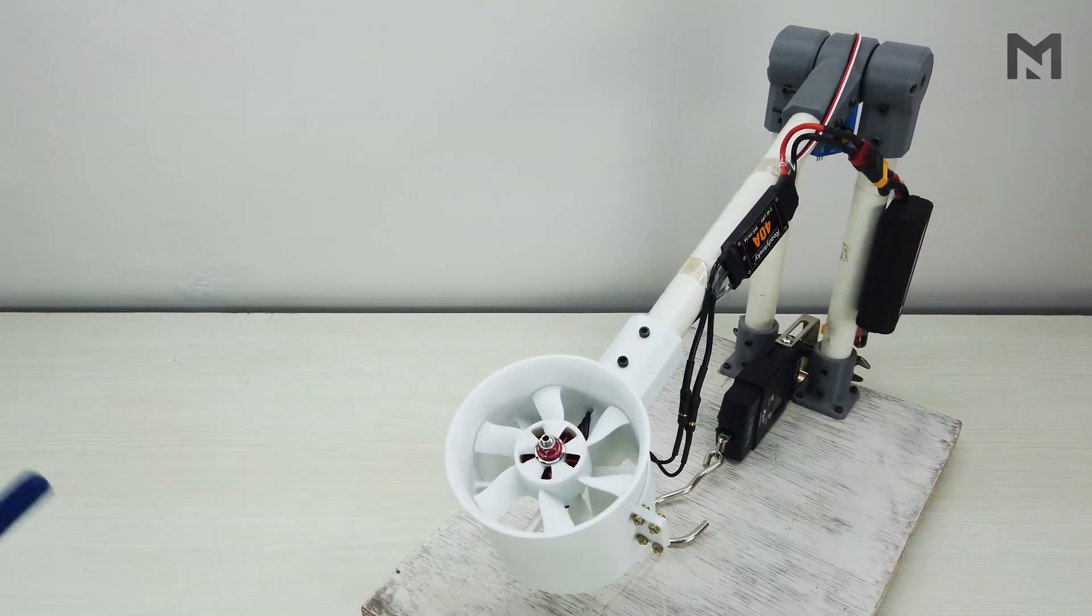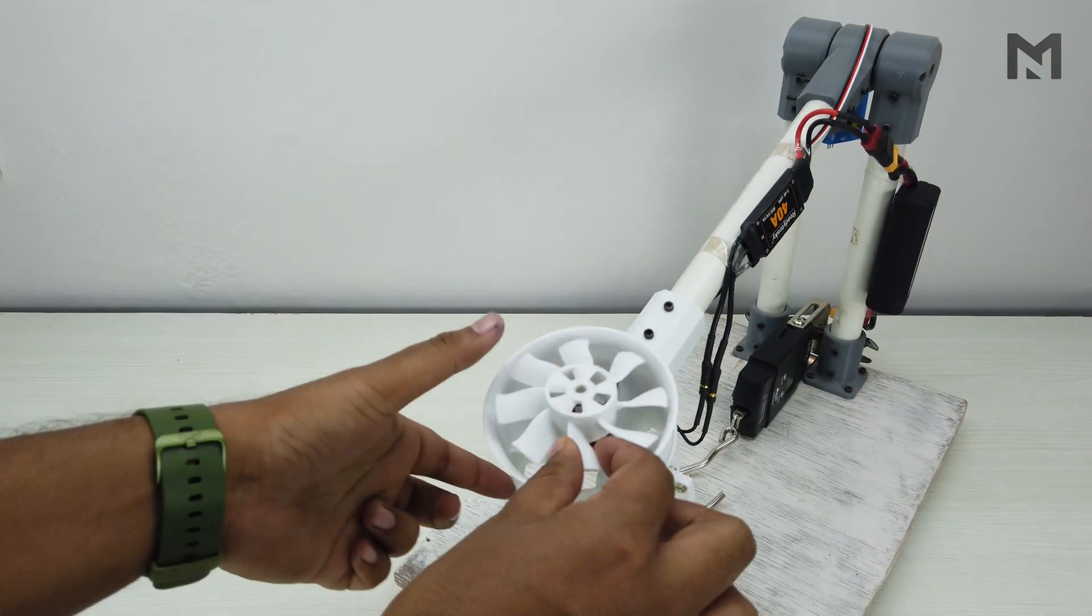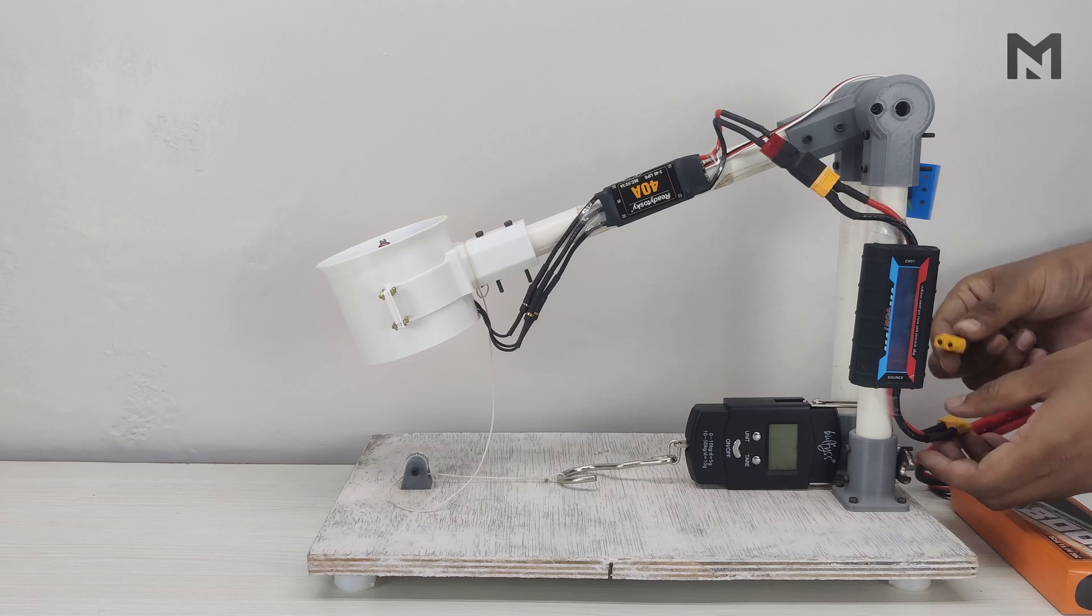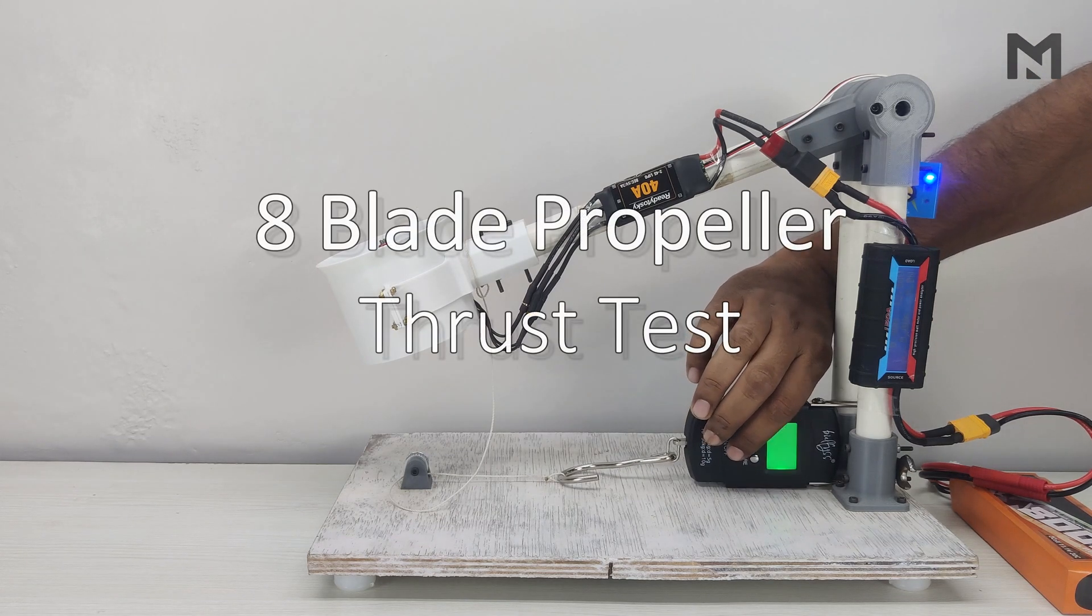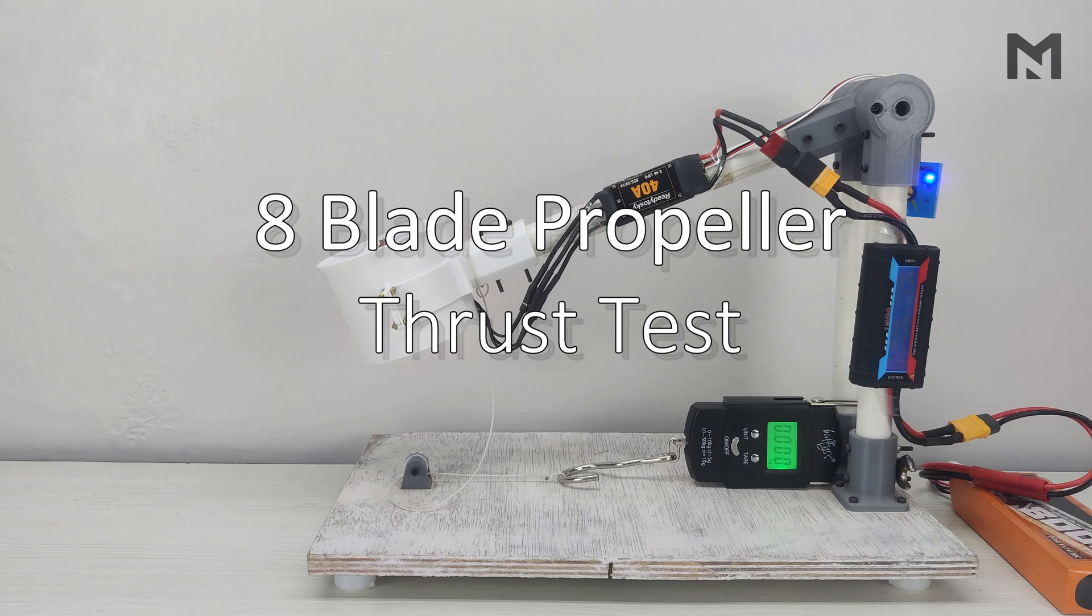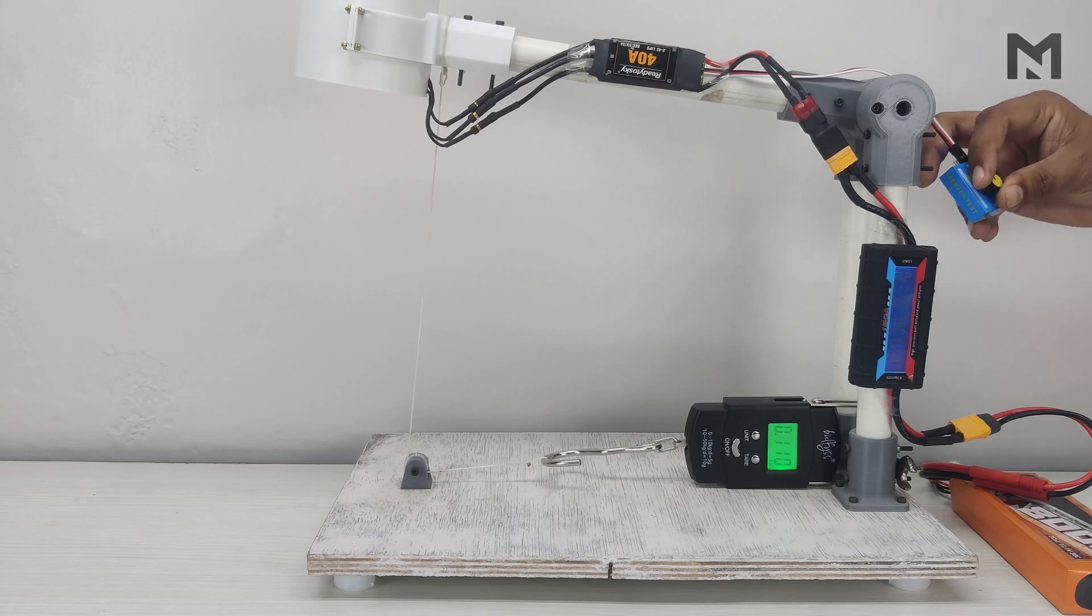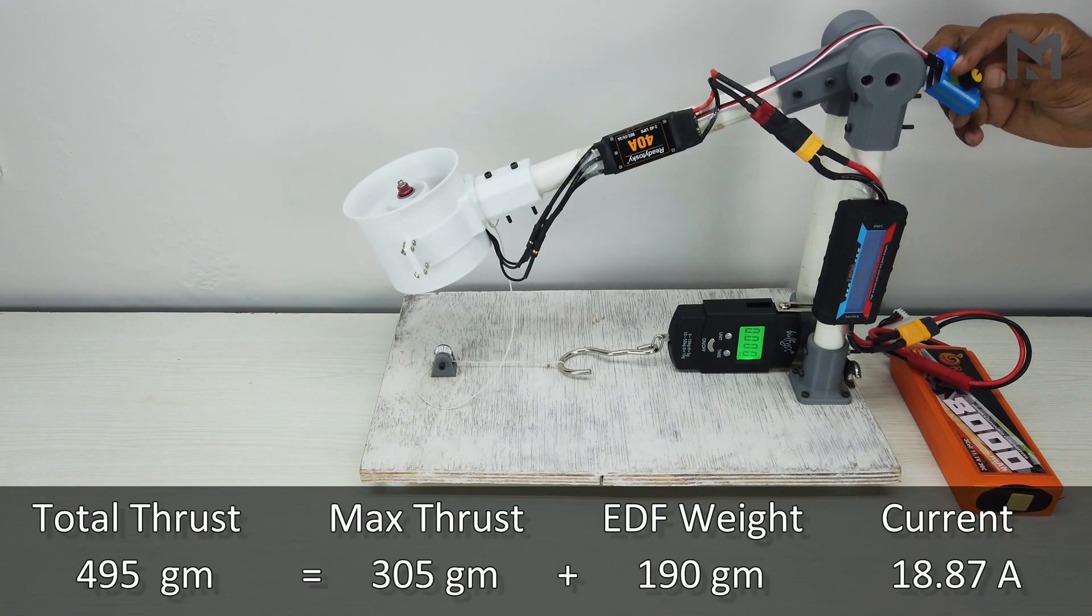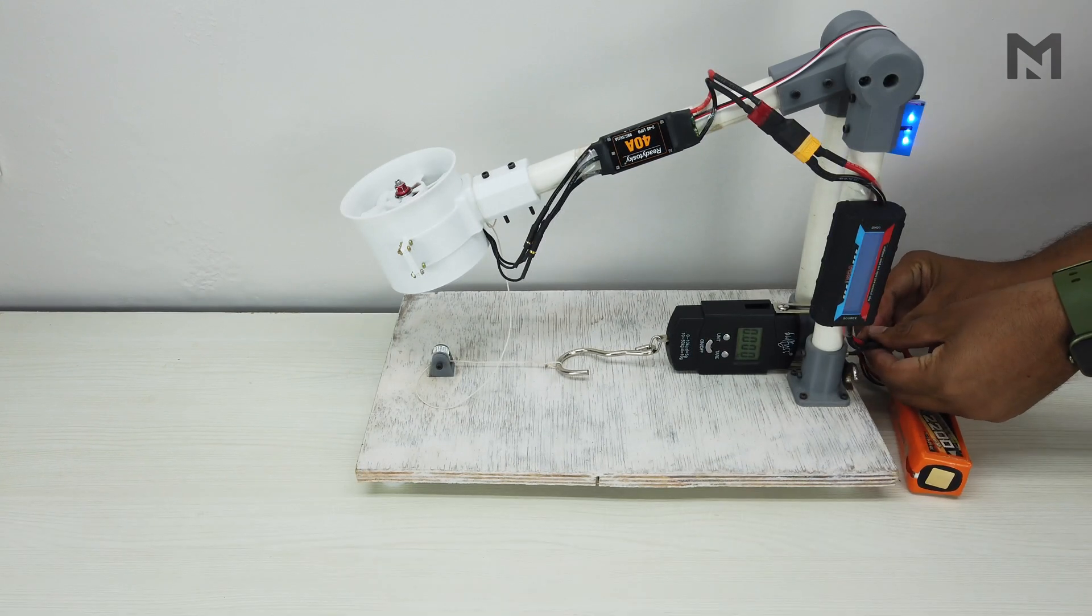Now it's time to replace this propeller with the 8 bladed one. This is the 8 bladed propeller that I am going to use. Attach it on the EDF. Now connect the battery and start the test. We get a total thrust of 495 grams at 18.87 Amperes. Now I will check the thrust with a 4S battery.